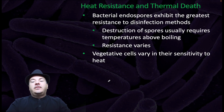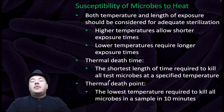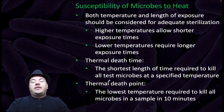In regards to heat resistance and thermal death, bacterial endospores exhibit the greatest resistance to disinfection methods. Destruction of spores usually requires temperatures above boiling, and resistance varies between spores. Vegetative cells vary in their sensitivity to heat. Both temperature and length of exposure should be considered for adequate sterilization. Higher temperatures allow shorter exposure times; lower temperatures require longer exposure times. Thermal death time is the shortest length of time required to kill all test microbes at a specified temperature. Thermal death point is the lowest temperature required to kill all microbes in a sample in 10 minutes.